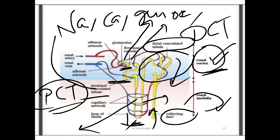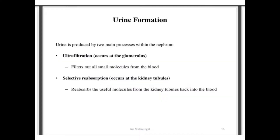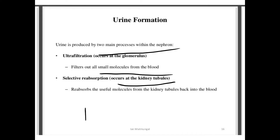To summarise the nephron diagram: it is divided into the renal cortex and renal medulla, containing the Bowman's capsule, proximal convoluted tubule, distal convoluted tubule, and collecting duct. Urine is produced by two main processes: ultrafiltration, which occurs at the glomerulus and filters out all small molecules from the blood; and selective reabsorption, which occurs at the PCT where useful molecules are returned to the blood.